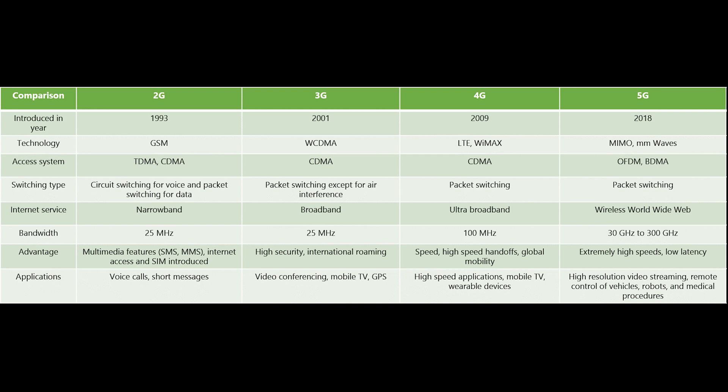3G combines aspects of the 2G network with new technologies and protocols to deliver a significantly faster data rate. It used WCDMA — Wideband Code Division Multiple Access — a third-generation standard that employs the Direct Sequence Code Division Multiple Access (DS-CDMA) channel access method and the frequency division multiplexing method to provide high-speed and high-capacity service.